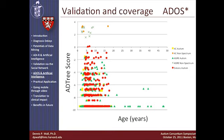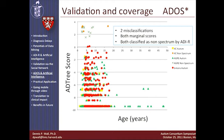We did have two misdiagnoses when looking at additional validation datasets, dropping our specificity somewhat, but not too badly. These two misclassifications both had small confidence scores, meaning we would have questioned them to begin with. It also turns out they were classified in the opposite direction by the competing diagnostic instrument ADOS, suggesting these individuals should be re-examined.